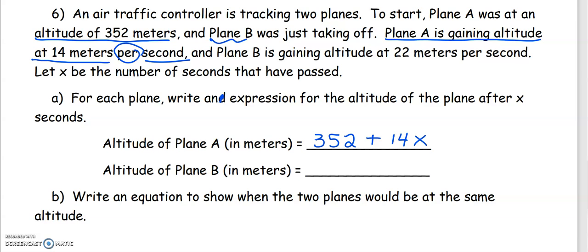Plane B was just taking off, so if plane B is just taking off, then it's not in the air yet, so its altitude is zero. It's right at the ground. Plus, it's gaining altitude at 22 meters per second: 22x.